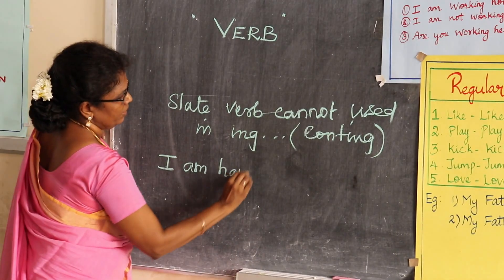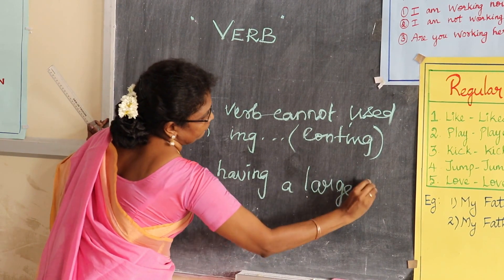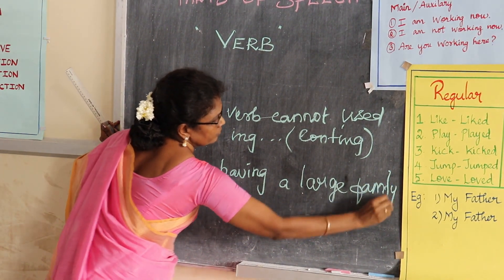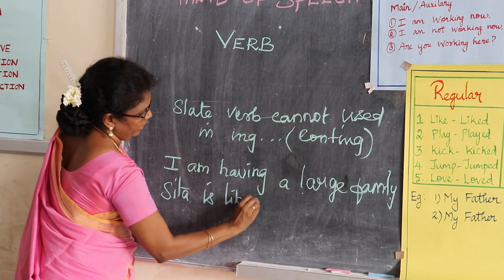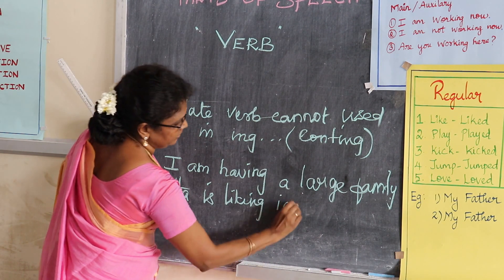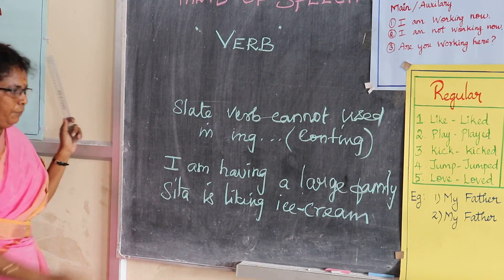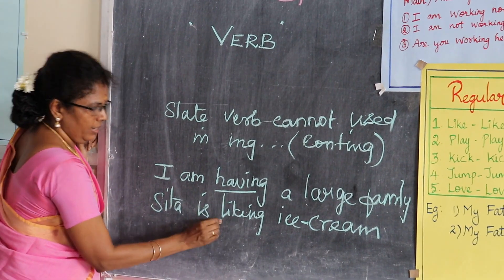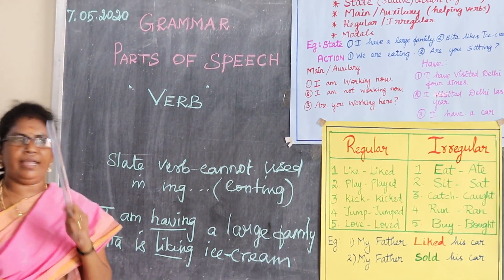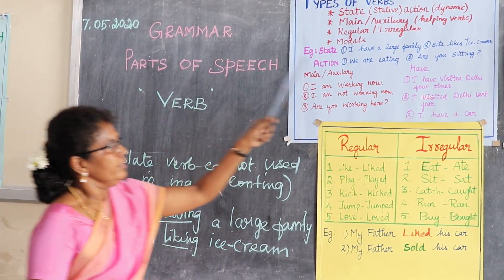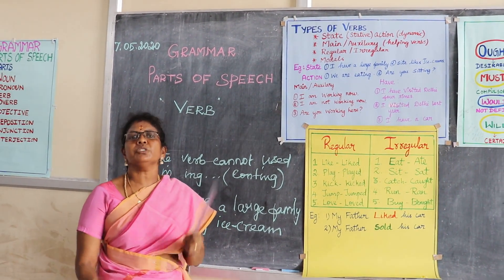Consider: 'I am having a large family' — is it correct? No. And 'Sita is liking ice cream' — that is also not correct. Because have and like are state verbs; we cannot use ING with them. But eat and sit are physical activities, so we can use ING with those.